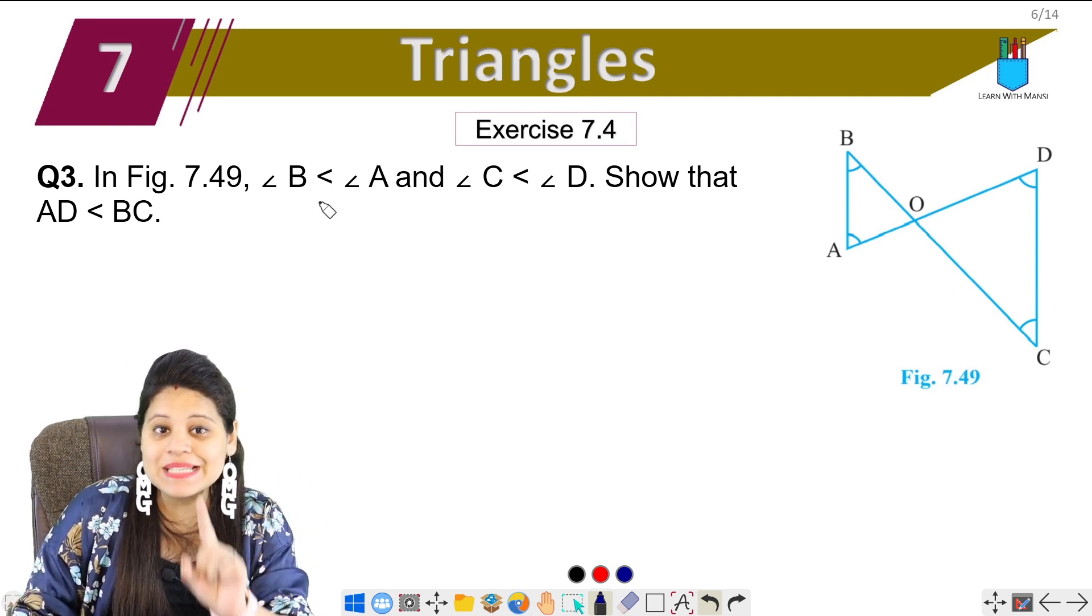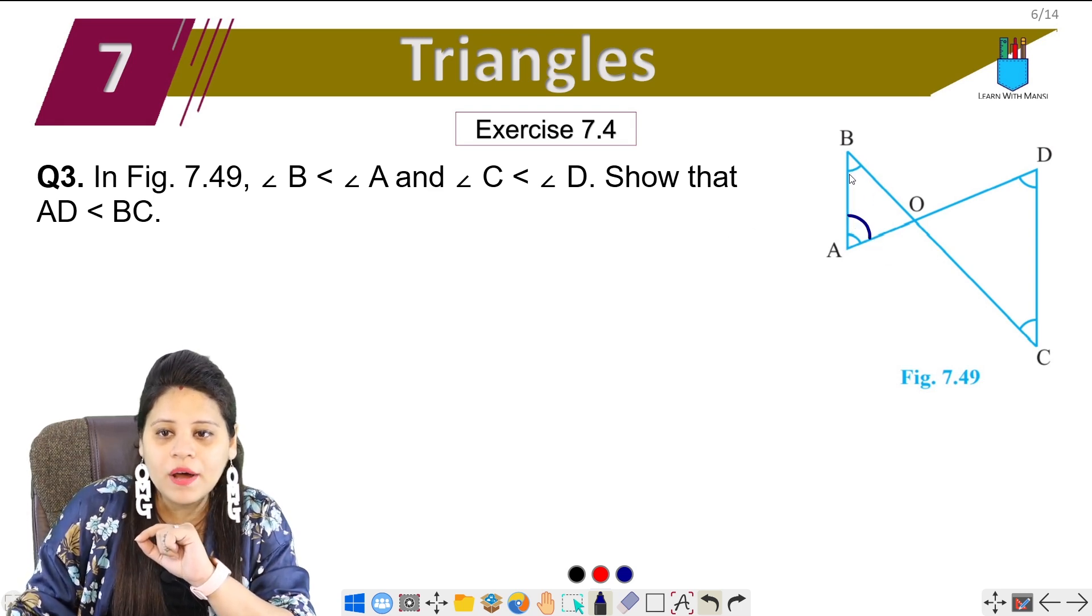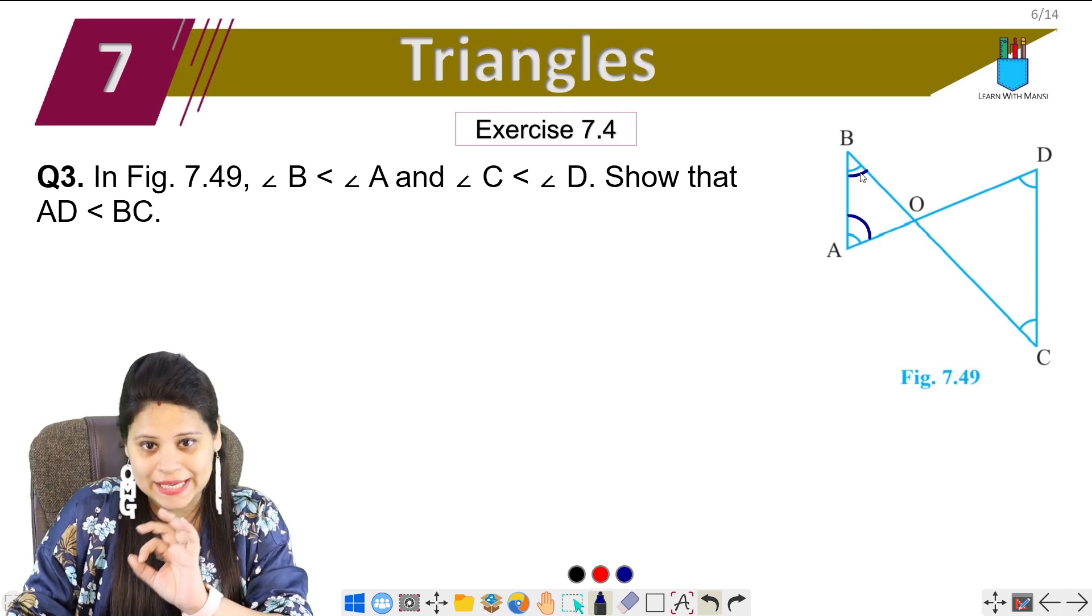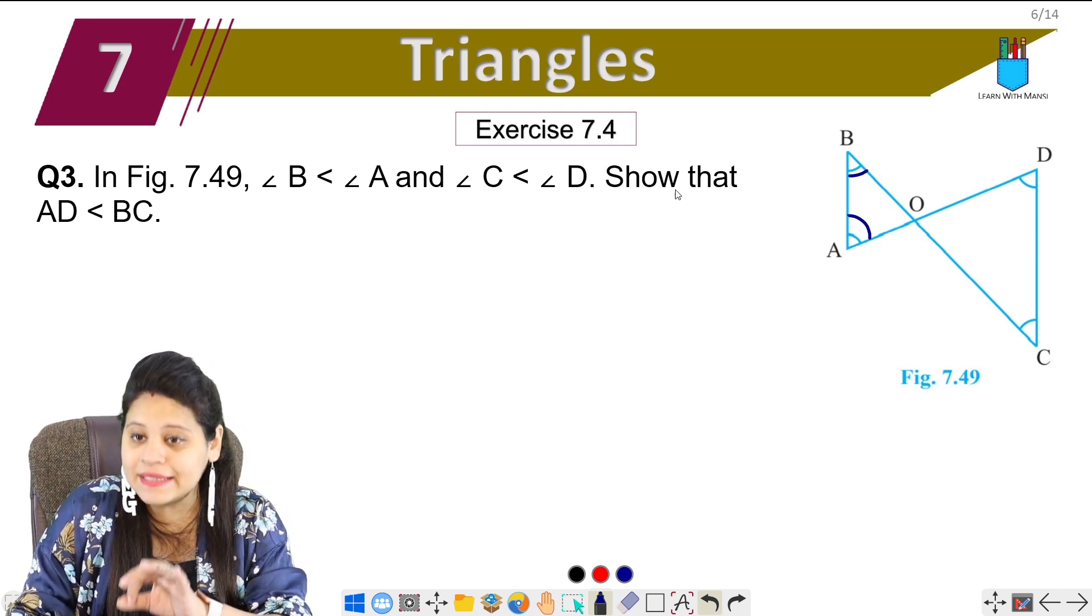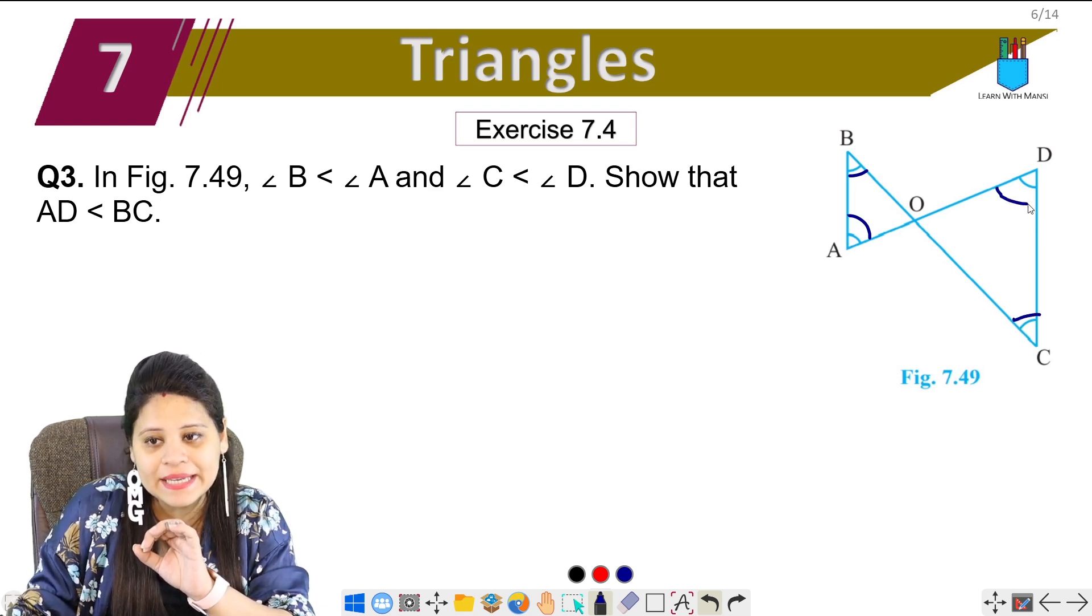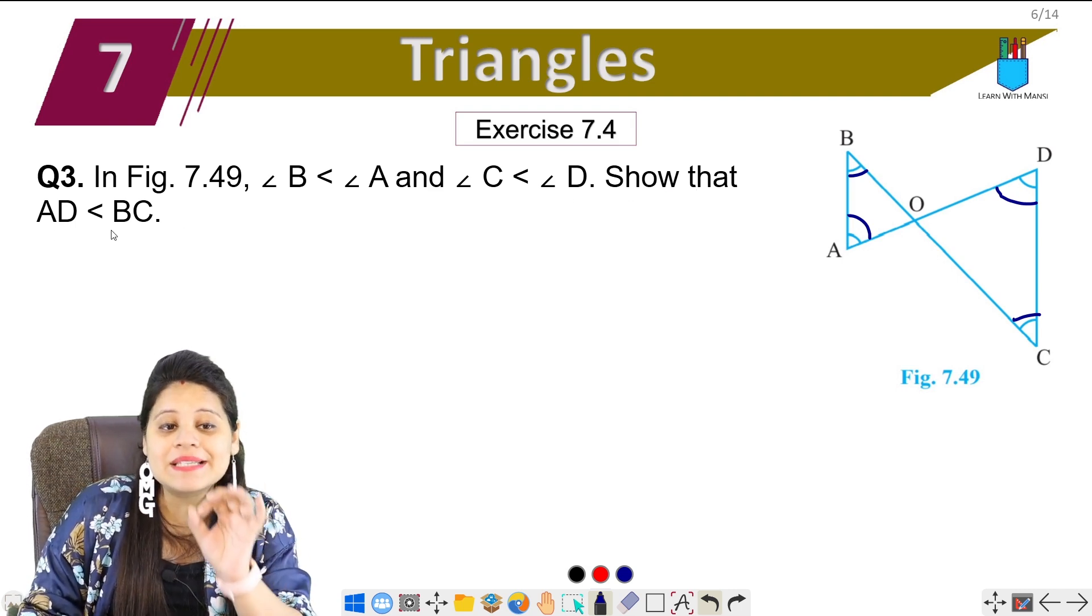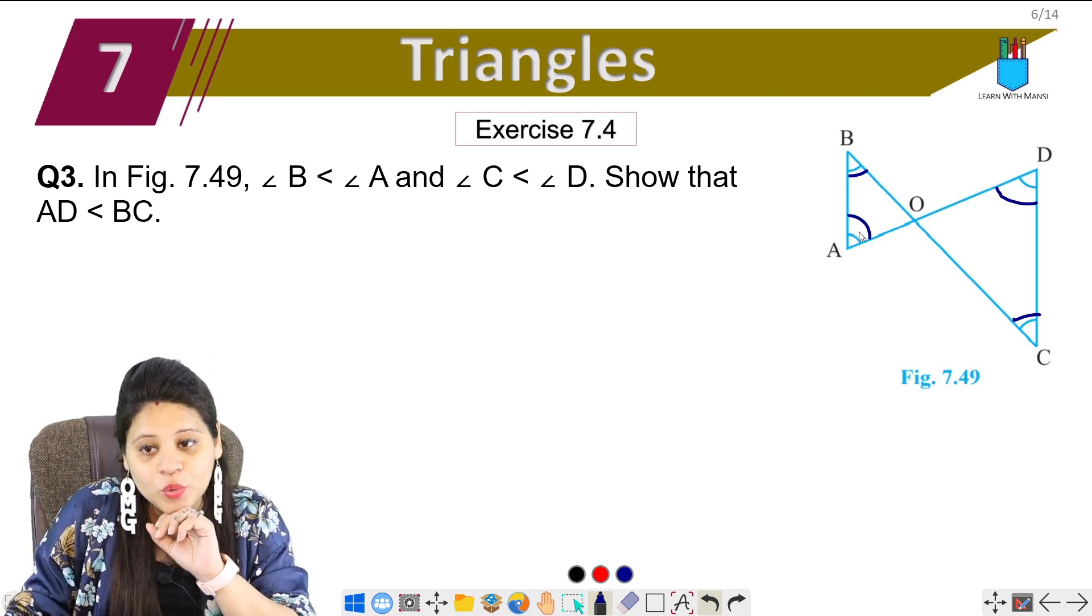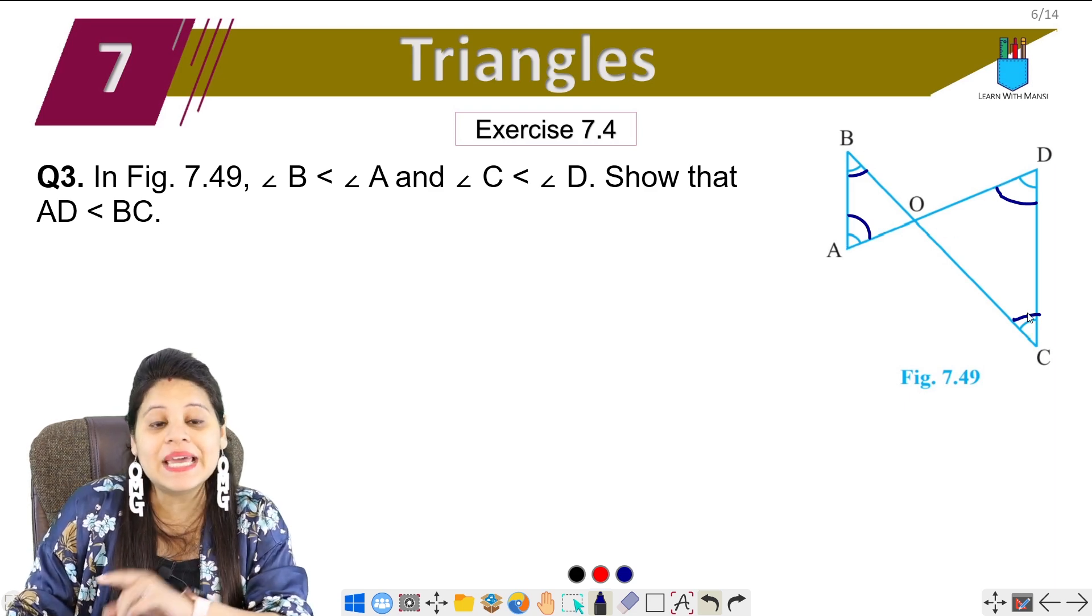Angle B is less than angle A, angle A is bigger and angle B is smaller. Angle C is less than angle D, angle C is smaller and angle D is bigger. Show that AD is less than BC. Now we have to prove that AD is smaller than BC.